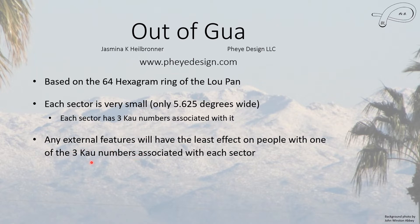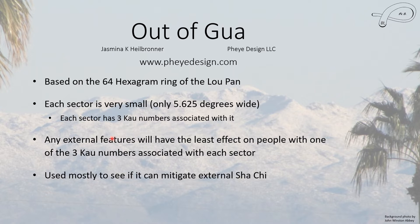What these three Gua numbers do is that any external features will have the least effect — sometimes no effect at all — on the people with one of those three Gua numbers associated with these sectors. So this is a good way to mitigate Shaqi. And it works best, of course, if you have people with the same Gua number living in that location, or who happen to have another Gua number that is also Out-of-Gua. And most of the time it is used to mitigate external Shaqi.